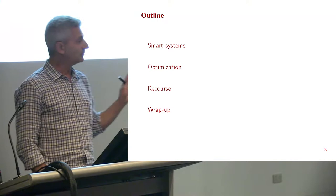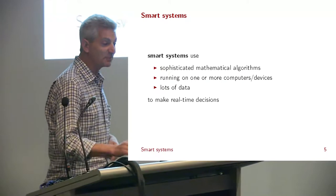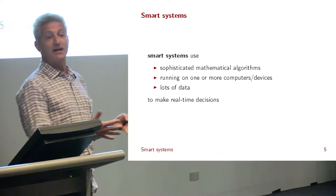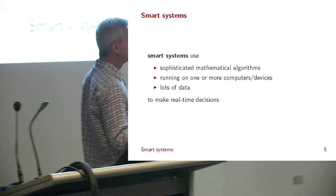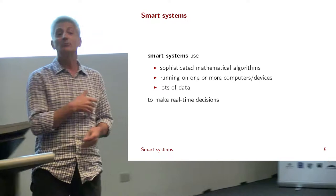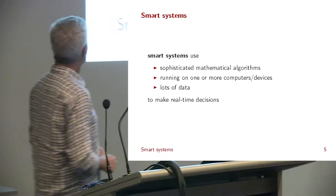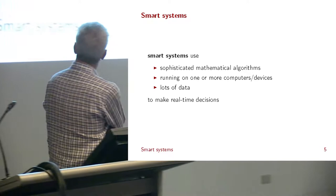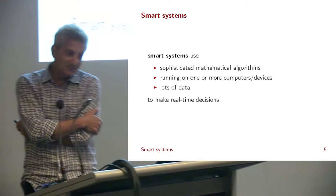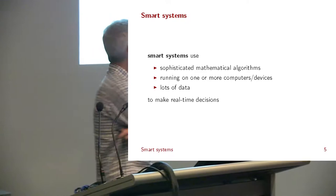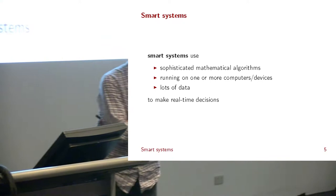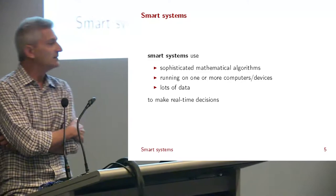Let's jump right in with what a smart system is. A smart system is something that uses sophisticated mathematical algorithms. It runs on one or more computers or devices — it could run on a smartphone, be embedded in a processor in your car, or be running at a data center. Typically it involves lots of data. And what smart systems do is make real-time decisions, usually without human intervention, though often there is a human somewhere with a big red emergency stop button.